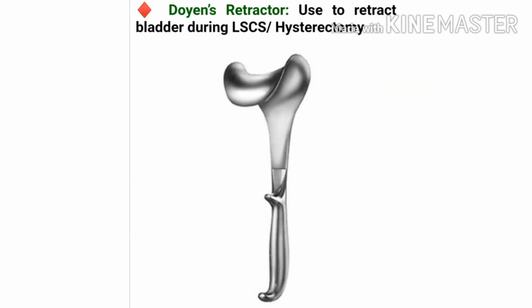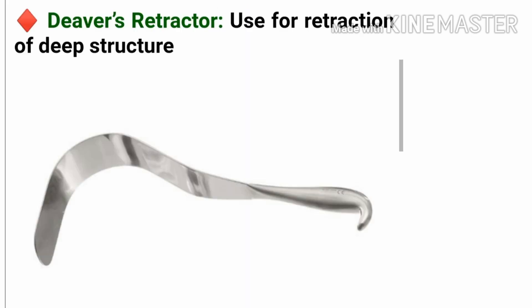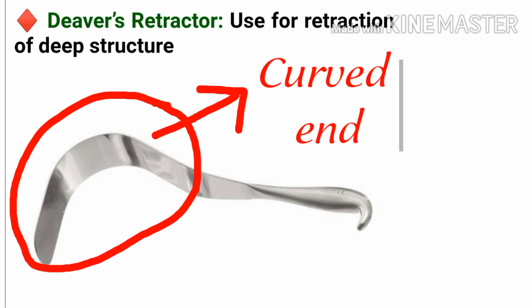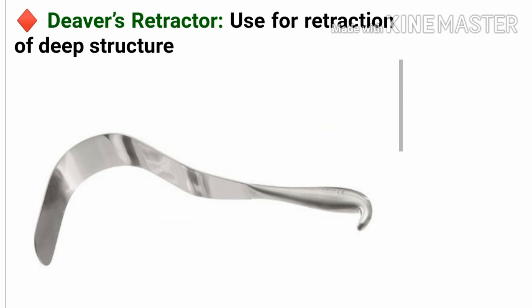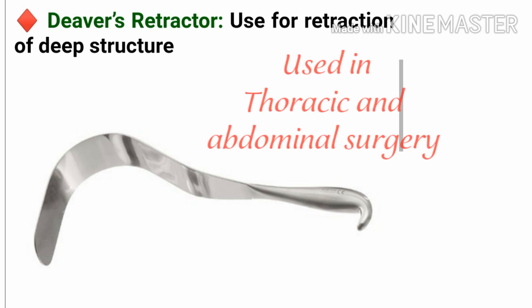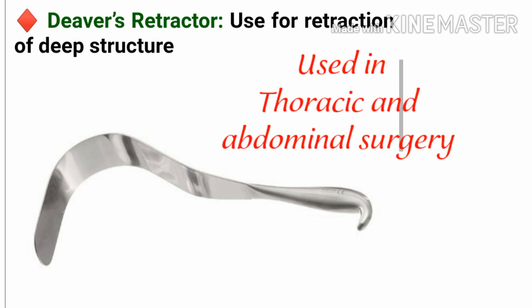This is the Doyen's retractor. It is used to retract the bladder during LSCS and hysterectomy — hysterectomy being the removal of the uterus. This is the Deaver's retractor; as you can see in the figure, it is a thin, flat instrument with a curved end. The curved ends are placed at the edges of the incision and held by hand or clamped into place. It is used for retraction of deep structures in thoracic and abdominal surgery for holding back muscles, tissues, and bones.